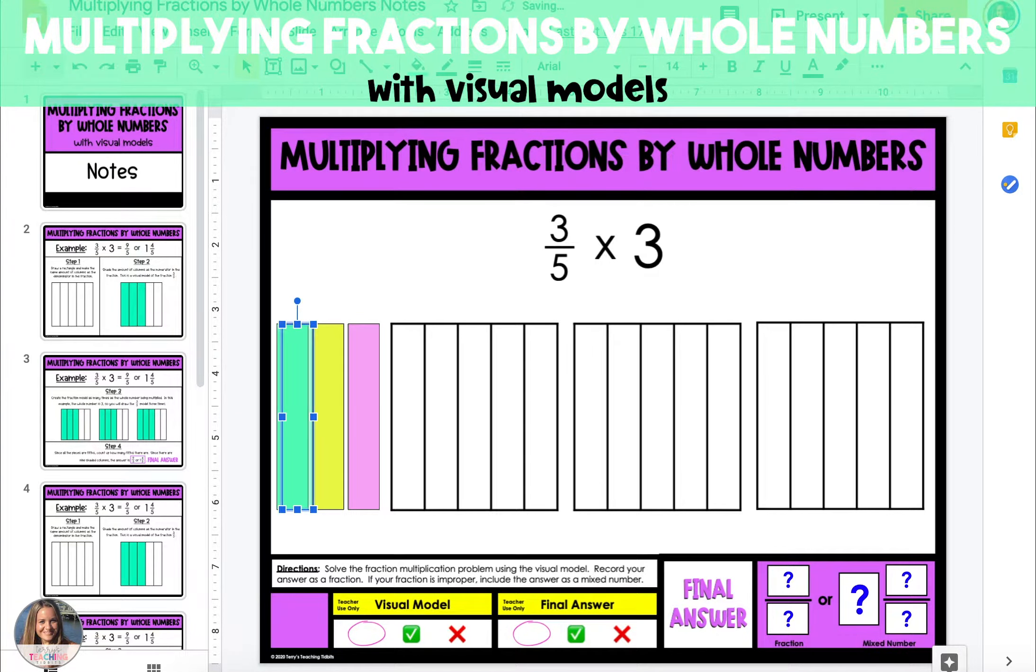In the first strategy, we're going to represent 3 fifths three times by shading in 3 fifths of the first model with one of the colors. Then you can grab the same color or a different color and shade in 3 fifths of the second model. So now we have 3 fifths two times. Finally, shade in 3 fifths of the third model.